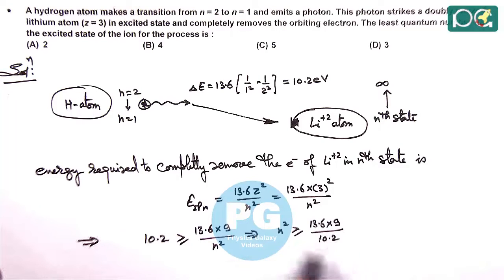Numerically solving this gives us n² ≥ 12, or n ≥ 2√3, which equals approximately 3.5 or 3.46. So n has to be greater than 3.5.